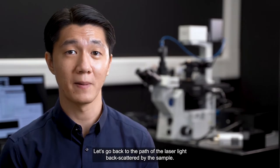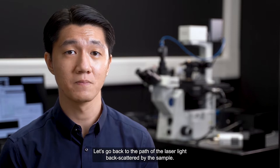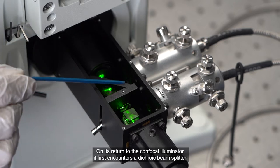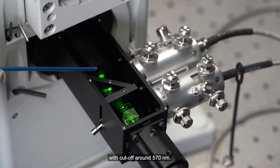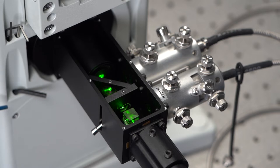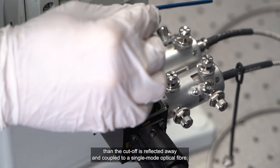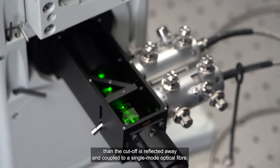Let's go back to the path of the laser light backscattered by the sample. On its return to the confocal illuminator, it first encounters a dichroic beam splitter with cut-off around 570 nanometers. Here, Raman scattering with wavelength longer than the cut-off is reflected away and coupled to a single-mode optical fiber.